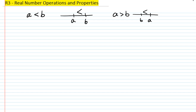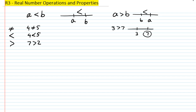For example, three is less than seven — on the number line three lies to the left of seven. We use inequality symbols to show relationships between numbers. There are five inequality symbols: the not-equal symbol (for example, four does not equal five), the less-than symbol (four is less than five), and the greater-than symbol (seven is greater than two). We also have the less-than-or-equal-to symbol, so four is less than or equal to five.